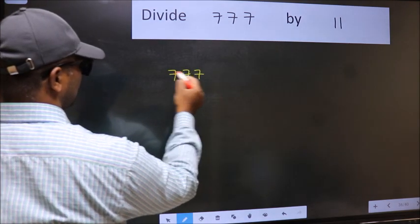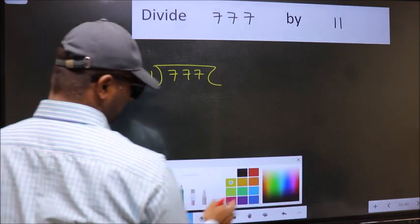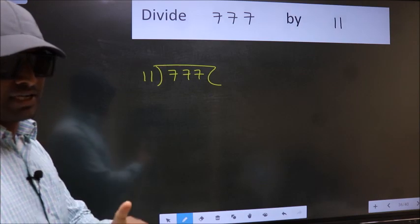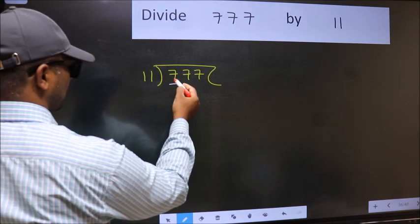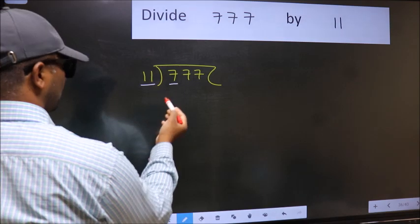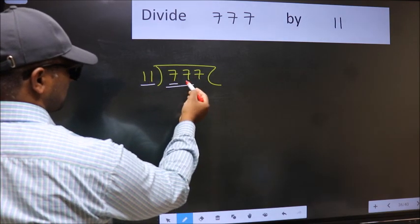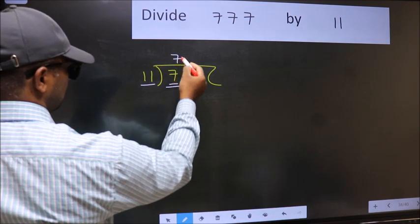777 and 11 here. This is your step 1. Next, here we have 7 and here 11. 7 is smaller than 11, so take two numbers, 77. When do we get 77 in 11 table? 11 times 7 is 77.